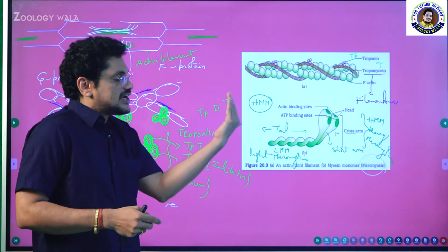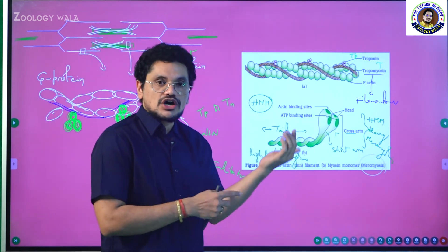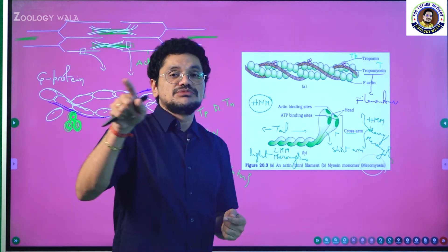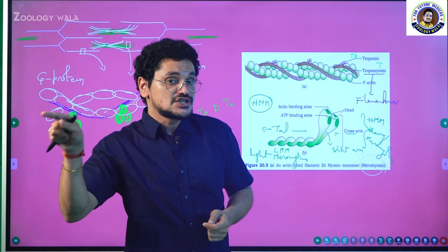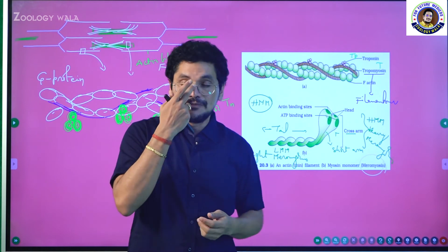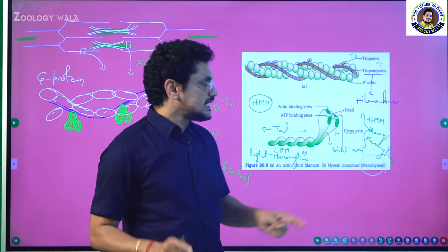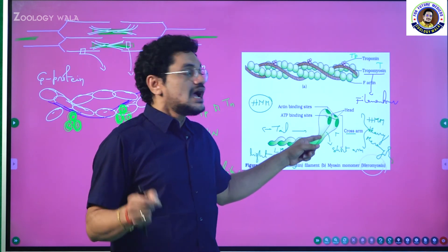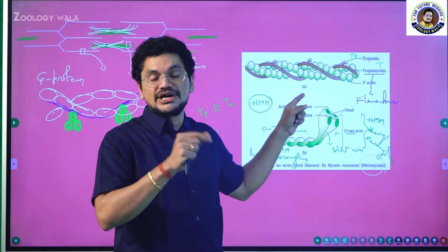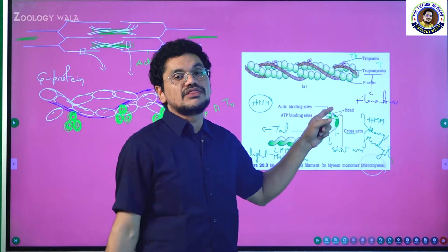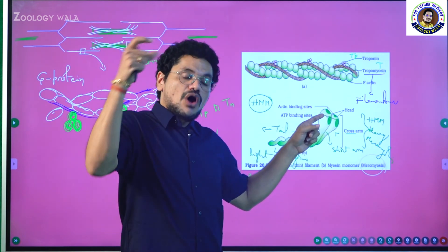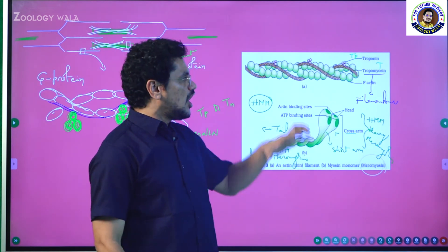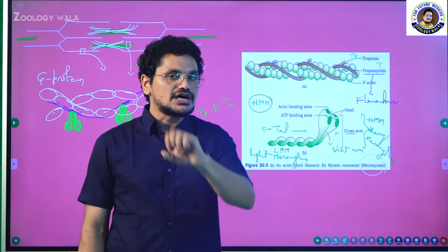Very important from an examination point of view: the cross arm is formed by the head and neck; how many meromyosins form one thick filament may be asked. Also remember who forms the heavy meromyosin, who forms the light meromyosin, who forms the thin filament, how many types of proteins are present in the thin filament, and what are the filamentous proteins.